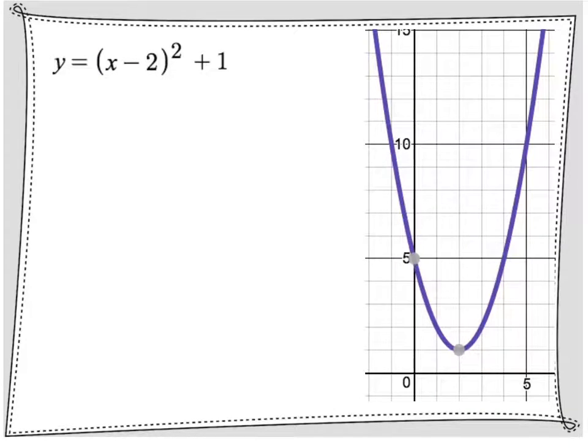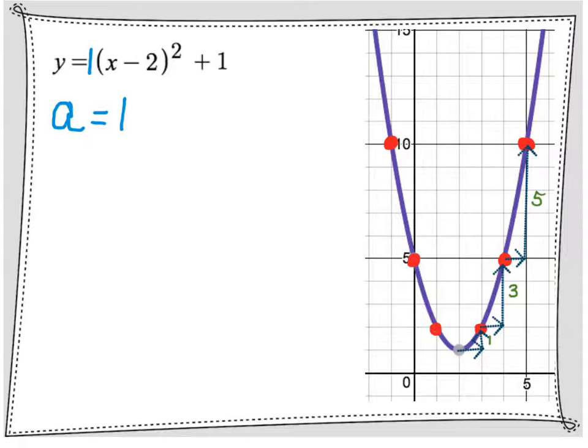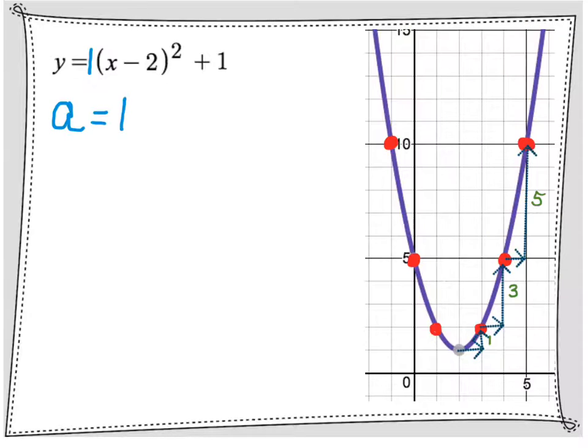Another one, A is equal to 1 again. The vertex has moved, but that doesn't matter. Starting at the vertex, right here, if I go over 1 and up 1, over 1 and up 3, over 1, up 5, over 1 and up 7, I would have the points of this graph.